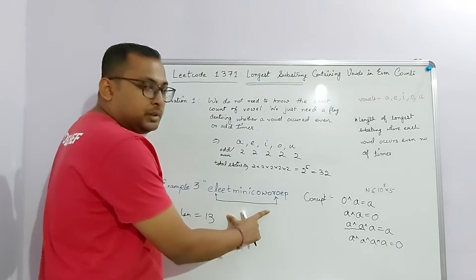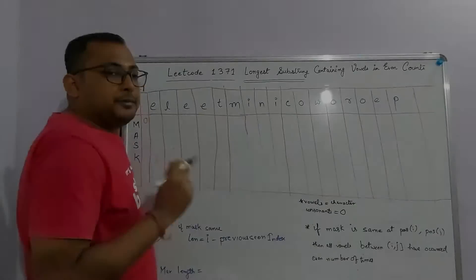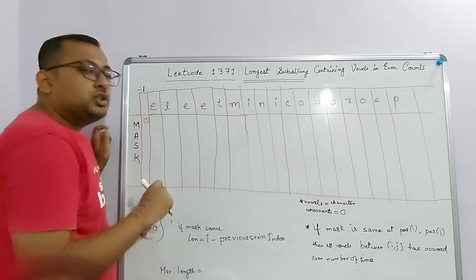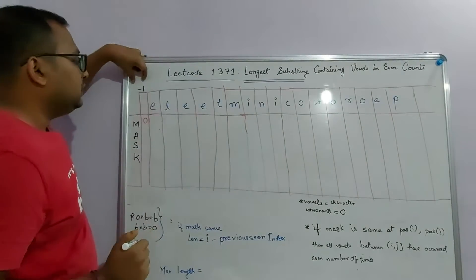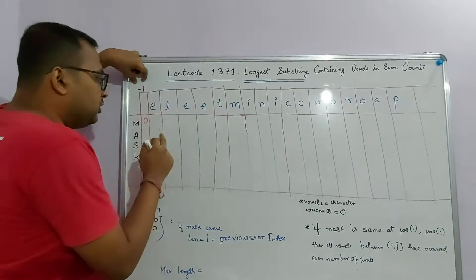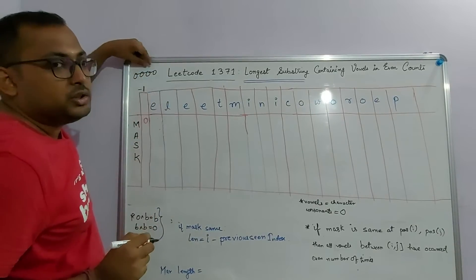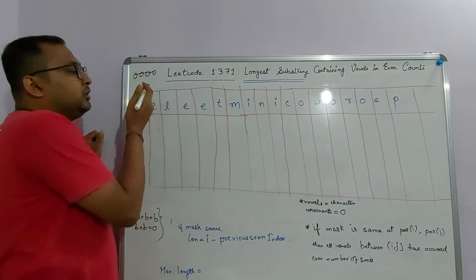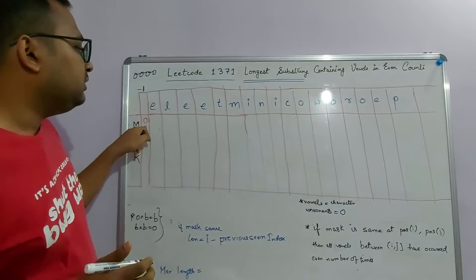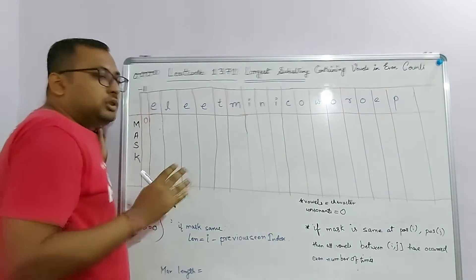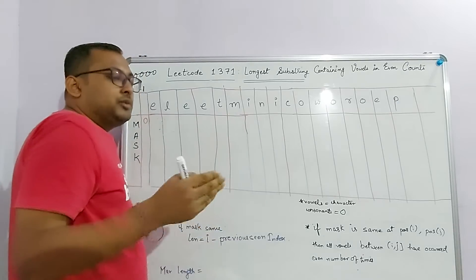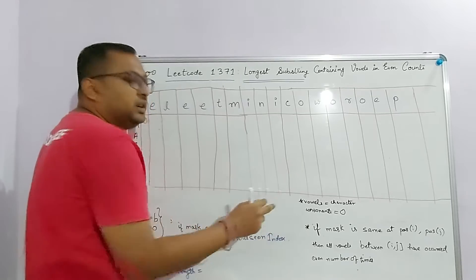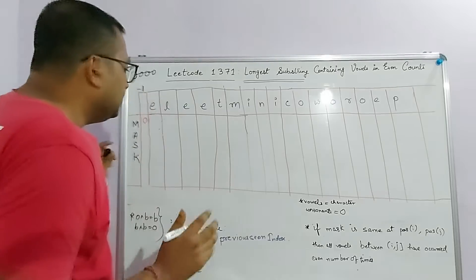Now let's solve the third example and see how bitmasks work. We have the string 'ELWTMINICOWROEP' and we'll fill in the bitmask values column by column. Initially we set the bitmask to 0, because when the bitmask is 0 all bits are 0, meaning all vowels have occurred an even number of times. For consonants, we assign a value of 0 since we don't care about them.